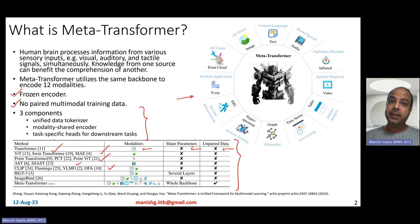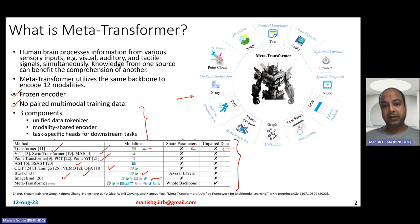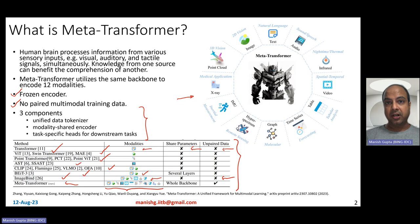For example, CLIP and Flamingo can process images and text together. There has also been BEiT-3, which I covered in a previous video, which can also process images and text. Then there is ImageBind, which can process around six different modalities but requires paired data. ImageBind binds everything with image at the center. MetaTransformer, by contrast, handles 12 different modalities with a shared backbone and requires no paired data at all.